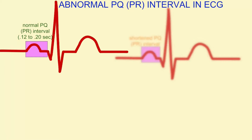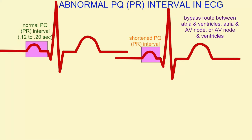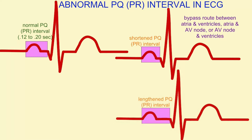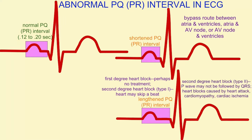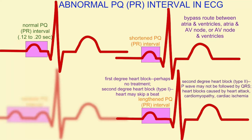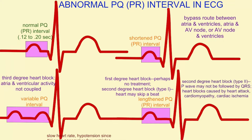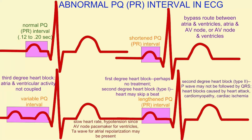The PQ interval, measured from the beginning of P to the beginning of Q — sometimes called the PR interval because the Q wave is not always present — has a normal length. If it is shortened, this could be because electrical impulses are reaching the ventricles through bypass routes. It could be lengthened especially if there has been a myocardial infarction, which perhaps leaves scar tissue and may cause the heart to skip a beat. It may result in slow heart rates and hypotension if the atria and ventricles are no longer following the same rhythm in their contractions. So there are a variety of different causes of abnormal PR intervals.